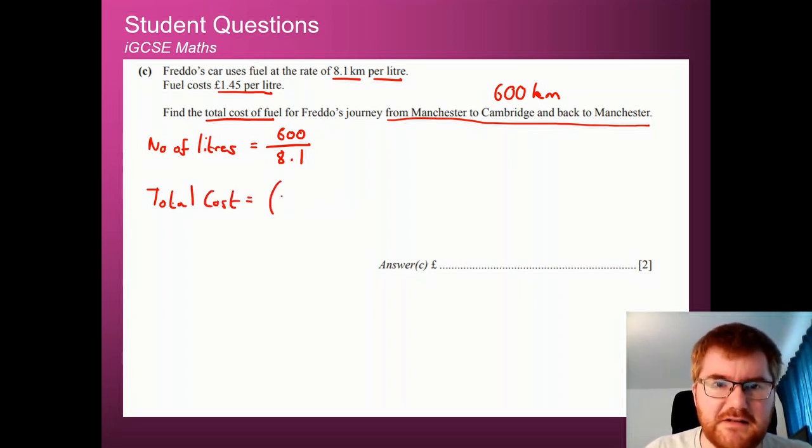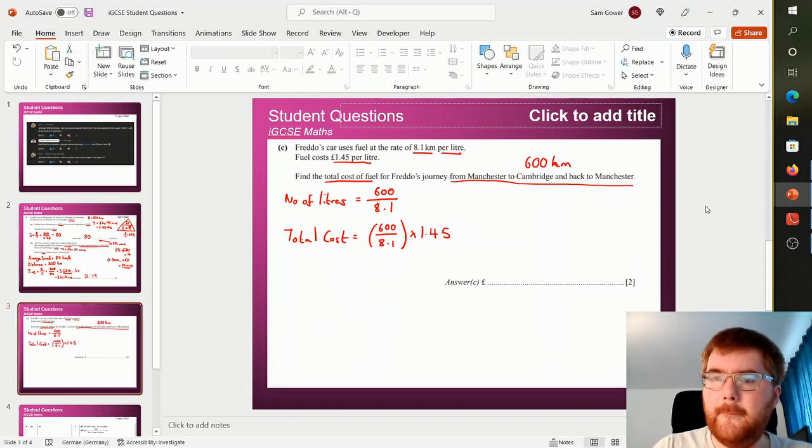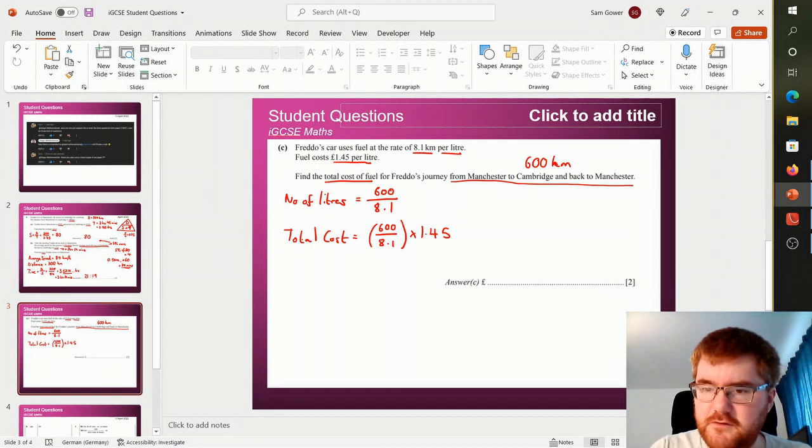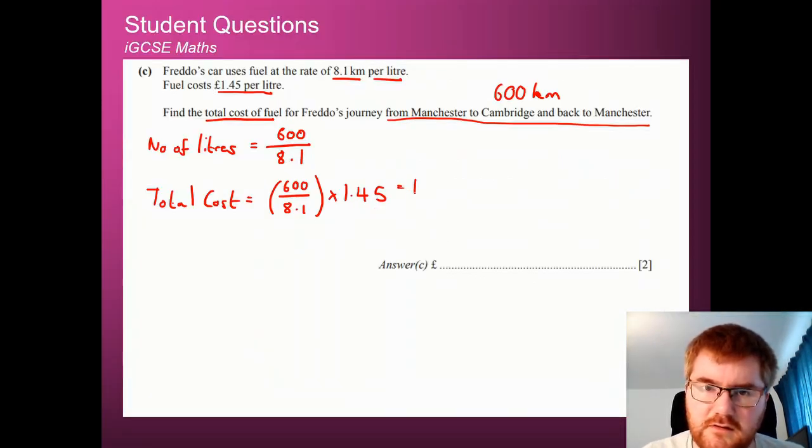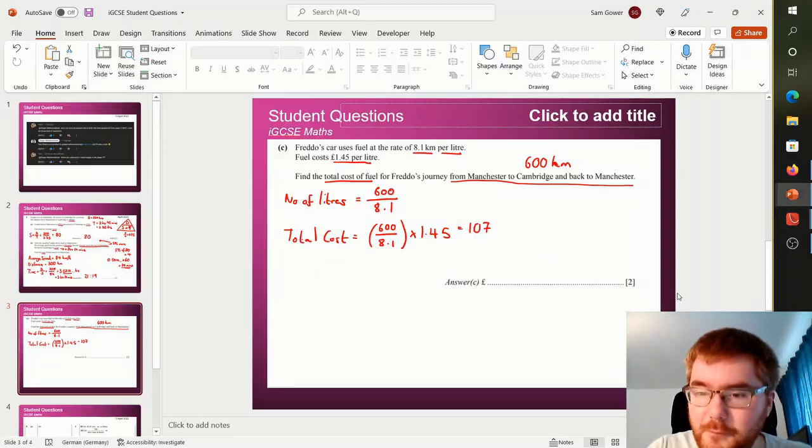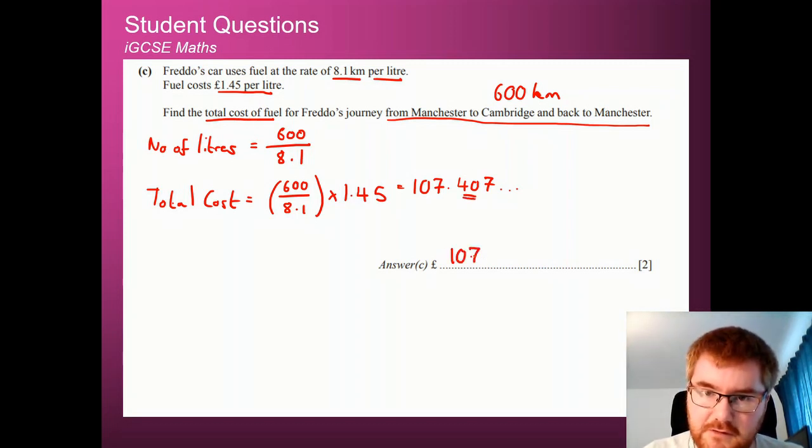We're going to take out how many litres are required, which is 600 divided by 8.1. And we're going to times that by the price here, so 1.45. And if we pop that into calculator, which I'll do just now. So 600 divided by 8.1, and then we times that by 1.45, we get this number here. So 107.407. I've forgotten what the answer was now. 107.407. That helps. And again, whenever we've got currency, we tend to do this to two decimal places. So it's going to be £107.41 for our answer.